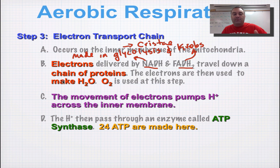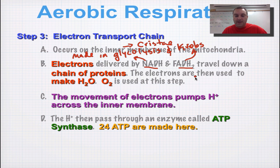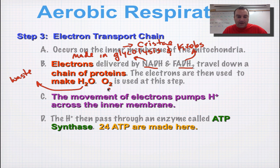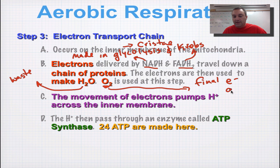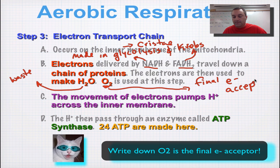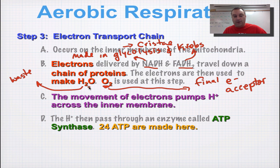These electrons are going to travel down a chain of proteins — proteins that can be embedded inside a membrane. These electrons are going to be used to make water, which will be a waste product. This is real important: oxygen is known as the final electron acceptor, and it's going to be used in this step. Some of that oxygen is going to be used to produce this water.